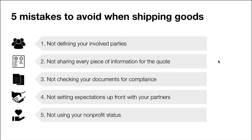Here's the summary of the five mistakes to avoid when shipping goods. Number one: not defining your involved parties — make sure you know who's responsible for what. Two: not sharing every piece of information for the quote — the more detail you provide, the better the estimate, and make sure you know whether it's an all-in rate or if charges may occur later. Number three: not checking your documents for compliance — we want goods to reach people in need as soon as possible. Four: not setting expectations upfront with your partners — make sure your service partner knows what they're optimizing for. And lastly: not using your nonprofit status — there are many benefits, and highlighting your status can help you save money.